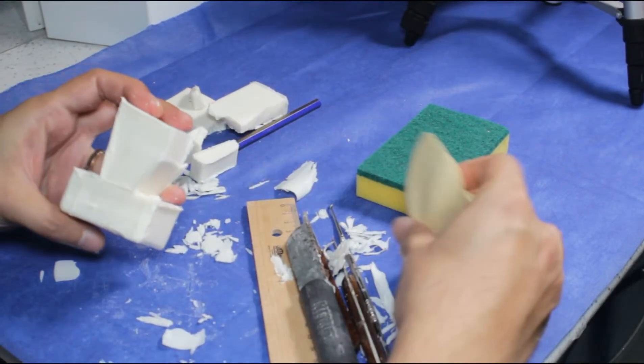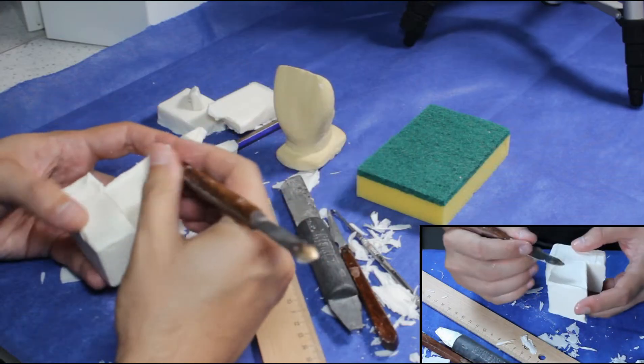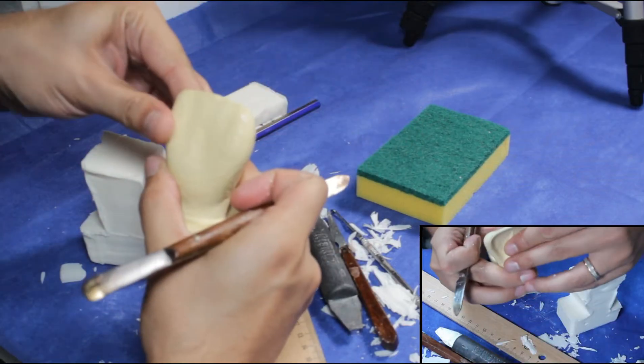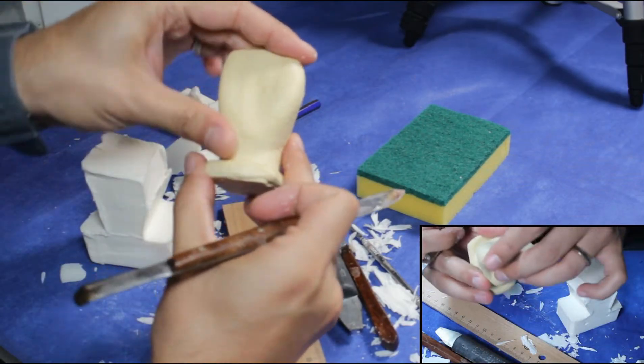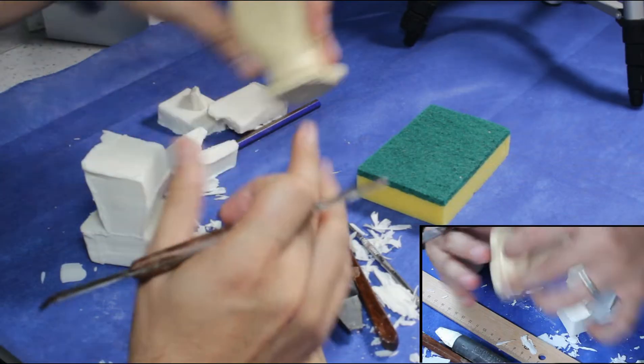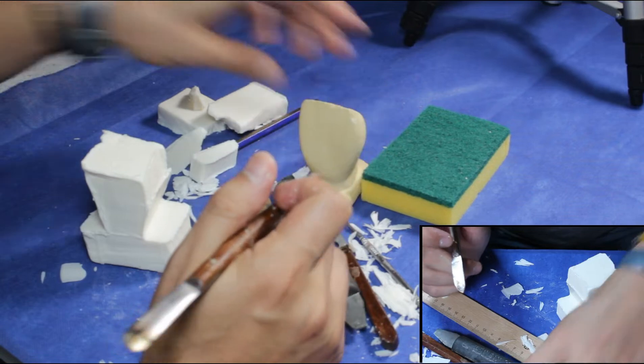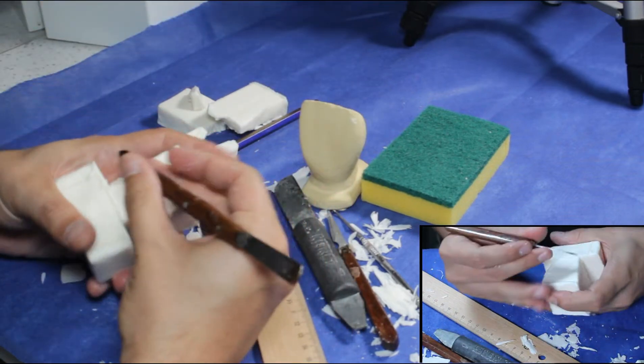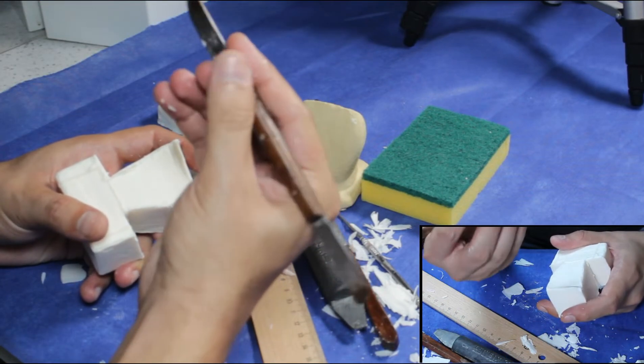From now on, we will continue with wax knife. As we see, there are concavities on the tooth. To carve them, you should hold the wax knife like a pencil.